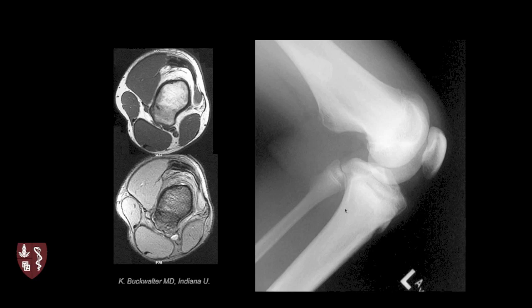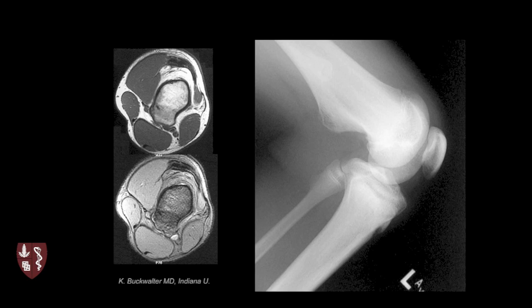Bursa formation is one complication; vascular compromise is another. Here's an example of a broad-based sessile osteochondroma on the posterior femur — this patient may actually have multiple hereditary exostoses given a small lesion off the fibula. The MRI shows continuity with the medullary space and impingement on the femoral vessels posteriorly. This young patient presented with claudication-type symptoms from mechanical effect on the superficial femoral artery. Complications include bursa formation, vascular compromise, nerve impingement, and local pain.